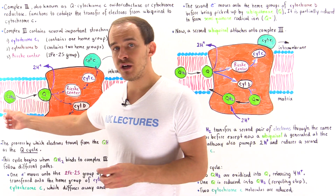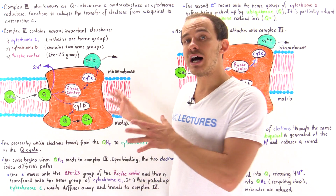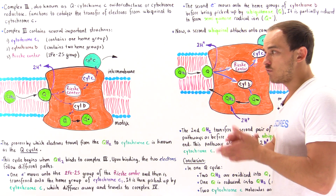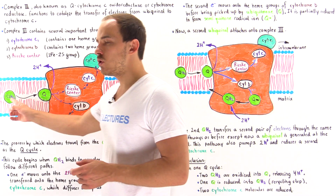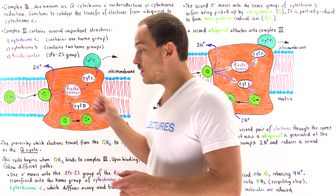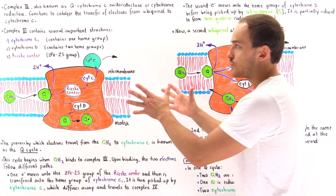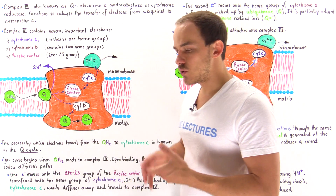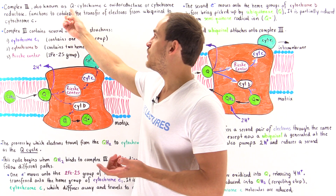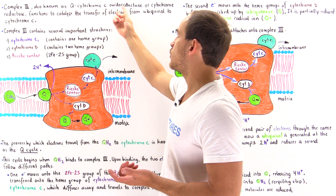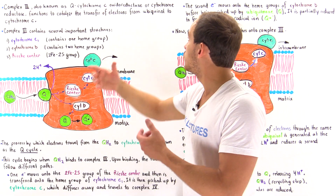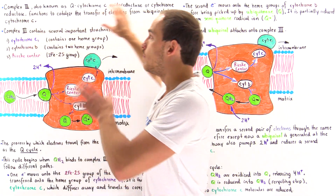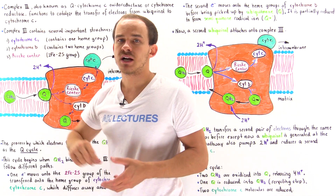The QH2, the ubiquinol, then travels onto complex three. In this lecture I'd like to discuss the details of what happens when ubiquinol, the reduced form of ubiquinone, actually attaches onto complex three. Complex three goes by many names — it is also known as Q cytochrome C oxidoreductase, where the Q stands for ubiquinol, or cytochrome reductase. Both of these names refer to complex three.